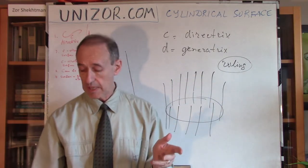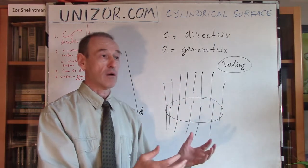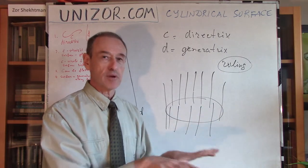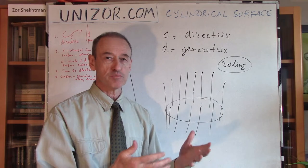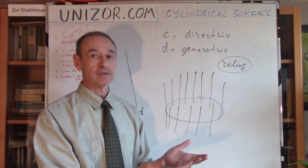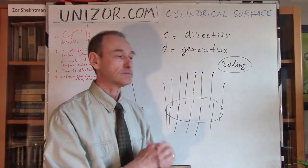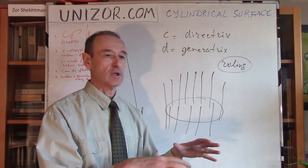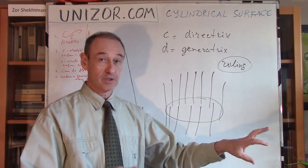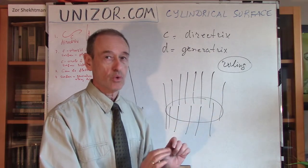This is not the case with certain other surfaces in space. For instance, if you take a spherical surface — like the surface of our Earth, which is almost spherical — you cannot flatten it without stretching and distortion. That's why the map presented on the flat surface of a page is not an exact representation of the real surface of the Earth; it's distorted in some way. Usually a small part is presented accurately, while the North and South poles are really distorted. That's because the sphere is not a cylindrical surface but a spherical surface, and we will talk about this in other lectures.